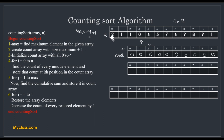This loop runs from 0 to n minus 1. If 2 is there, we increment index 2 from 0 to 1. If 1 is there, we increment index 1. Like that, we keep updating the count array. For example: 2 increments index 2 to 1; then 1 increments index 1; 0 increments index 0; 6 increments index 6; 5 increments index 5; 7 increments index 7; another 6 increments index 6 again; then 9, 8, and another 9. After processing all elements, the count array reflects how many times each value appears.